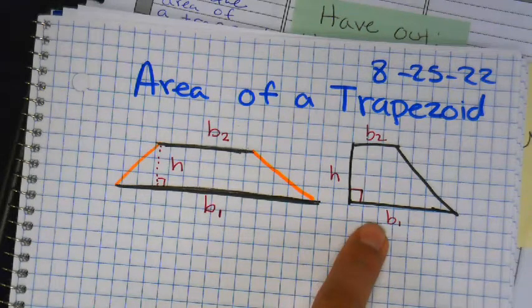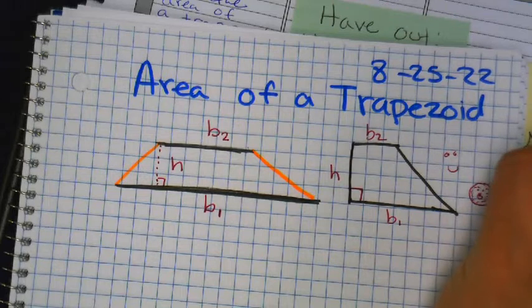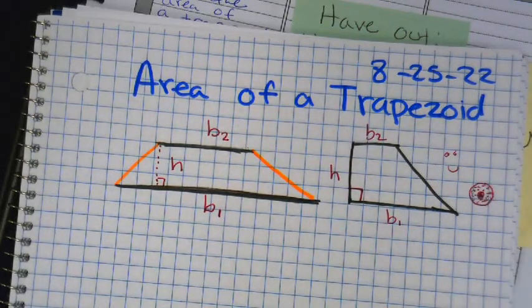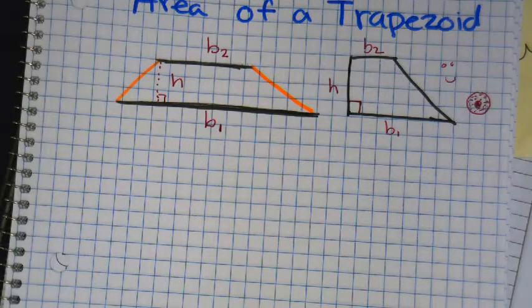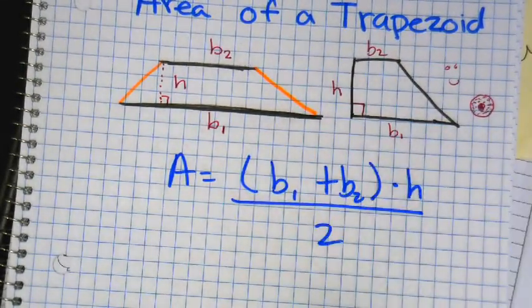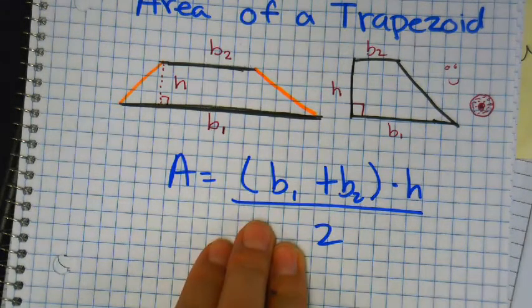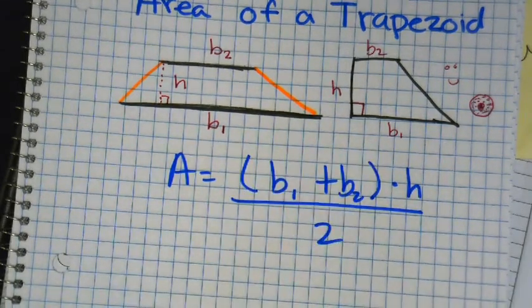The formula: area is equal to parentheses, base one plus base two, times your height, all divided by two. You will not be using this for your homework tonight — you'll be using it next week, but not tonight. Do not use this for a triangle or parallelogram. I don't want to see you using this on the triangle, which is upsetting.